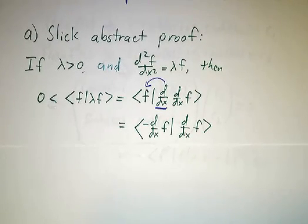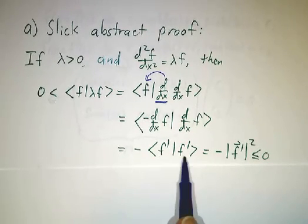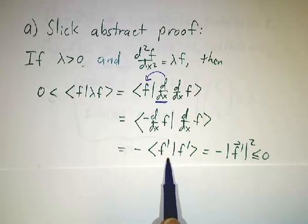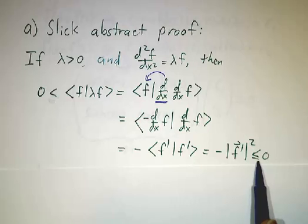But now we have minus the inner product of f' with f'. But the inner product of f' with itself has to be positive, or at least 0. So we get something that can't be positive.